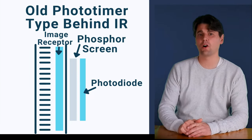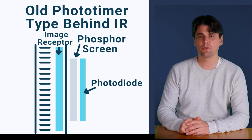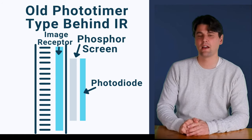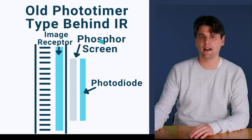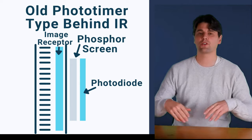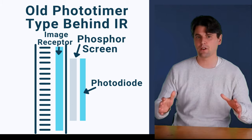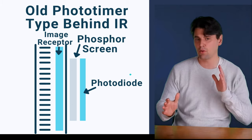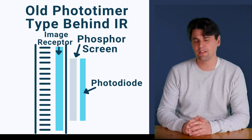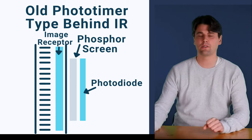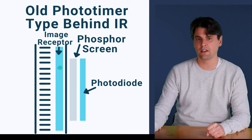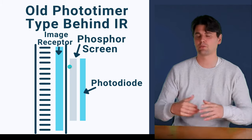In old techniques, which were sometimes called photo timers, those could be placed behind the image receptor. You could use for instance a phosphor screen and a photodiode in order to measure the x-rays passing through our image receptor. This was less sensitive because it's relying on just the leftover radiation - the radiation which passed through our image receptor.